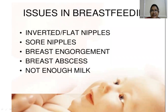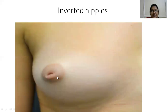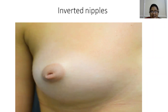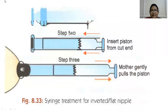Issues in breastfeeding include inverted or flat nipples, sore nipples, breast engorgement, breast abscess, and not enough milk. Flat nipples become prominent on eversion, whereas for inverted nipples we need to use the syringe method — this should be identified prior to delivery. After delivery we have to evert, elongate, and round the nipple regularly. Through the syringe method we cause eversion and elongation; repeated procedures cause prominence of the nipple. Inverted nipple causes difficulty in latching, so the baby latches on the nipple only rather than the nipple and areola.